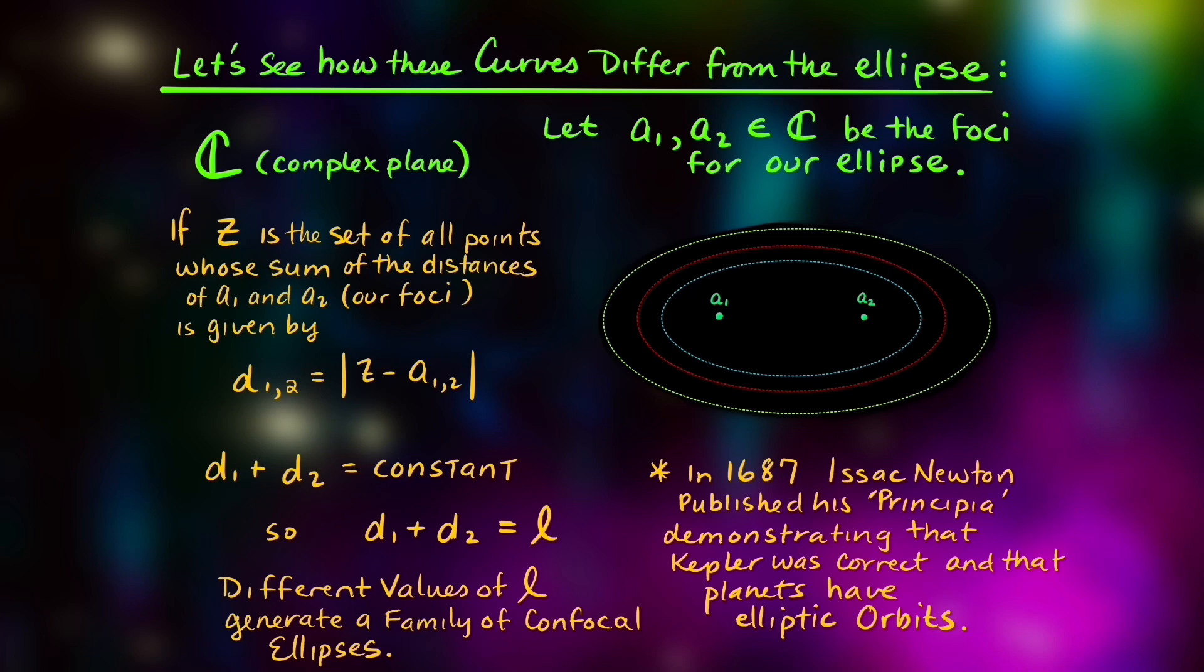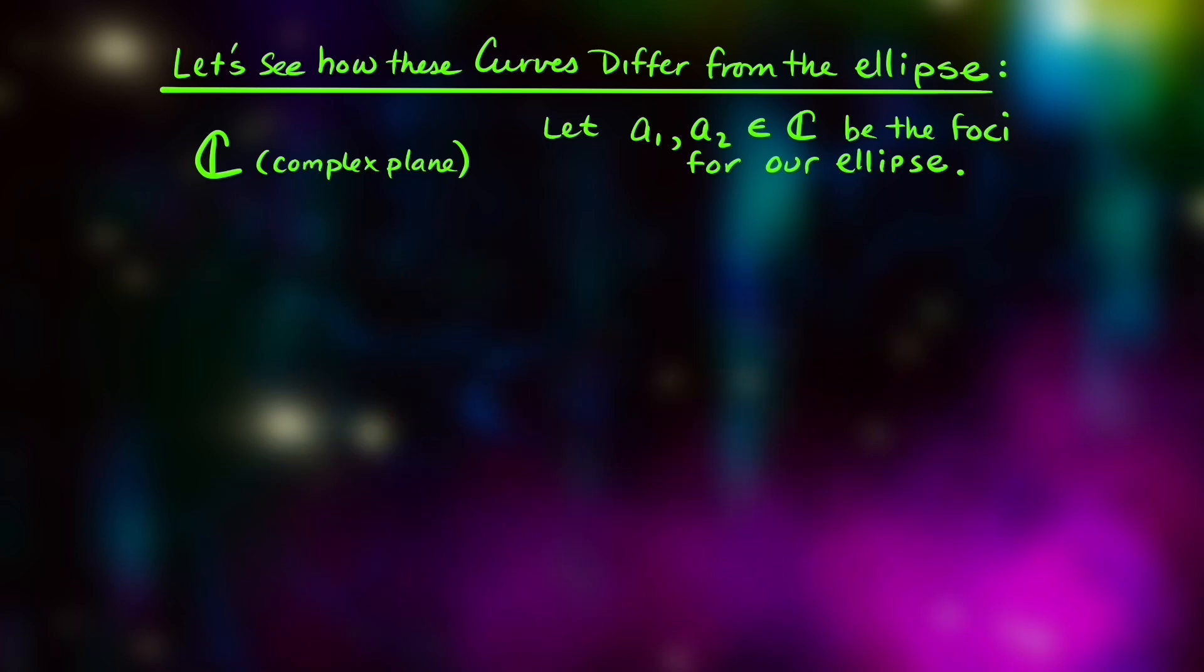And in 1687, Isaac Newton published his Principia, demonstrating that Kepler was in fact correct that planets do have elliptical orbits when he described his theory of gravitation.